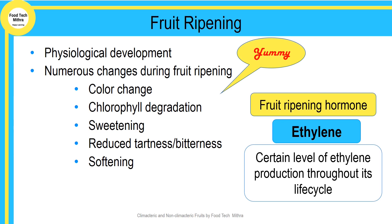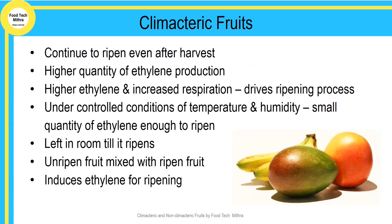Changes in color occur — the green color turns into yellow or red. This may happen due to the degradation of chlorophyll, and the fruits become softer and sweeter during ripening. It also reduces the tartness or bitterness in the fruit while ripening.